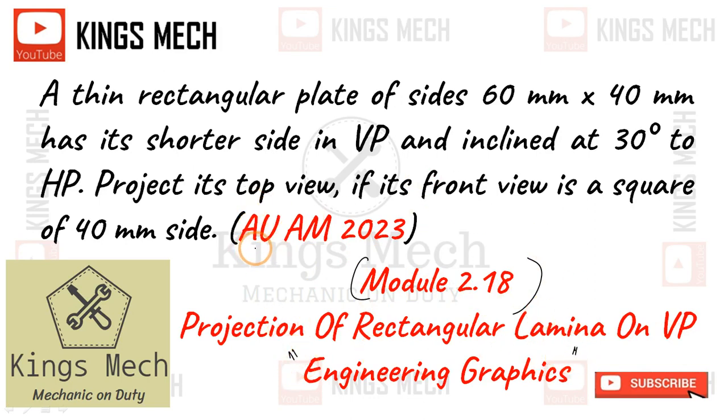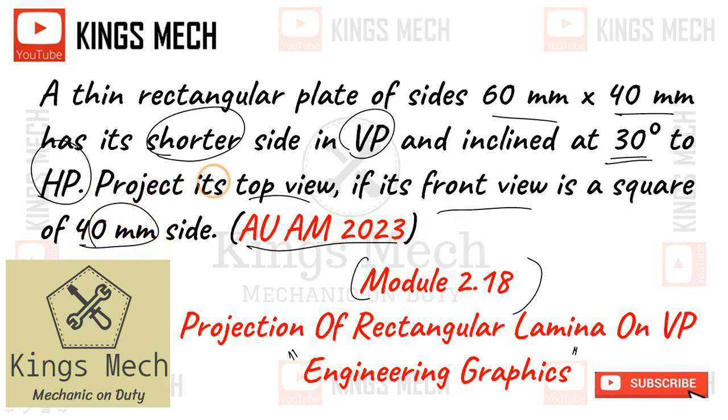This question was asked in Anna University April May 2023. A thin rectangular plate of sides 60mm by 40mm has its shorter side in VP and inclined 30 degrees to HP. Project its top view and front view if its front view is a square of 40mm side. So Anna University April May 2023 question.